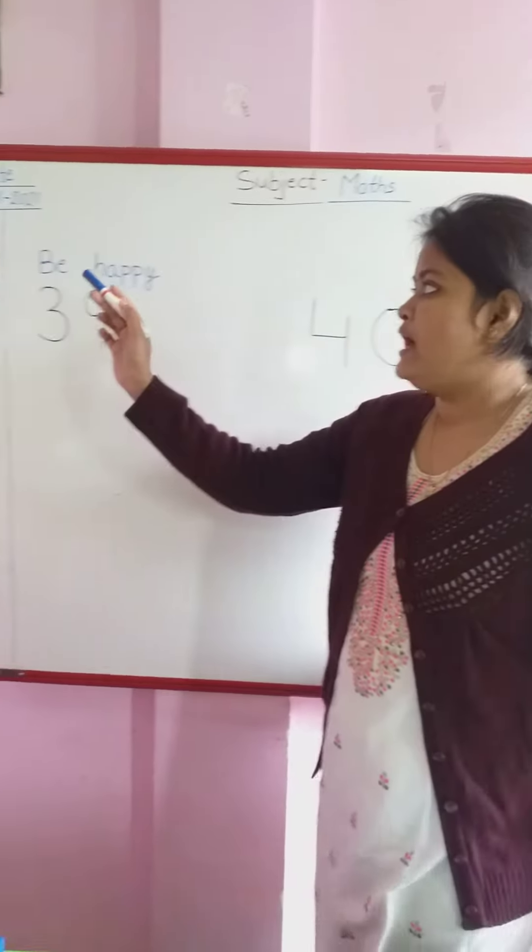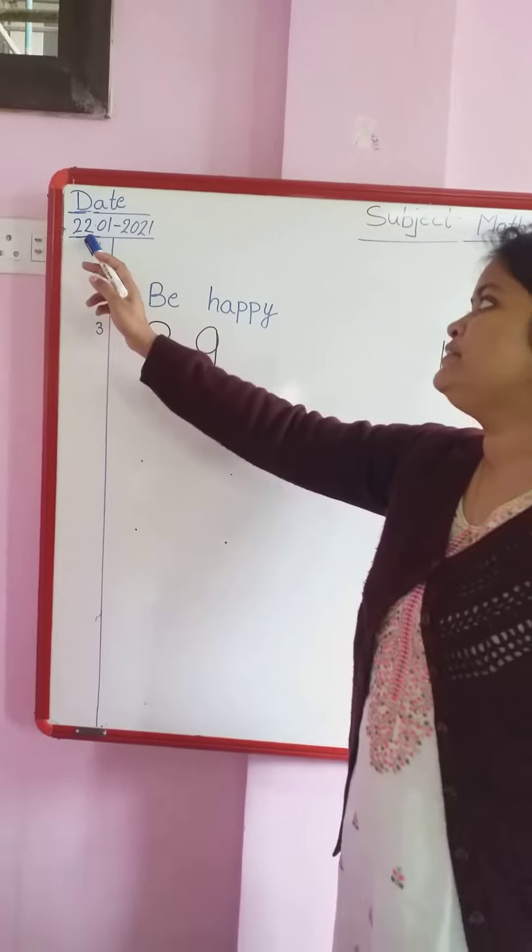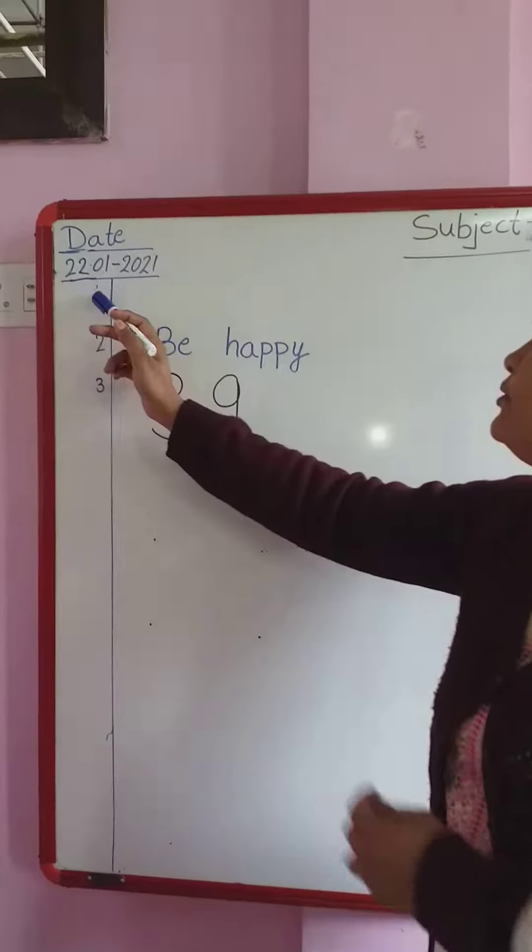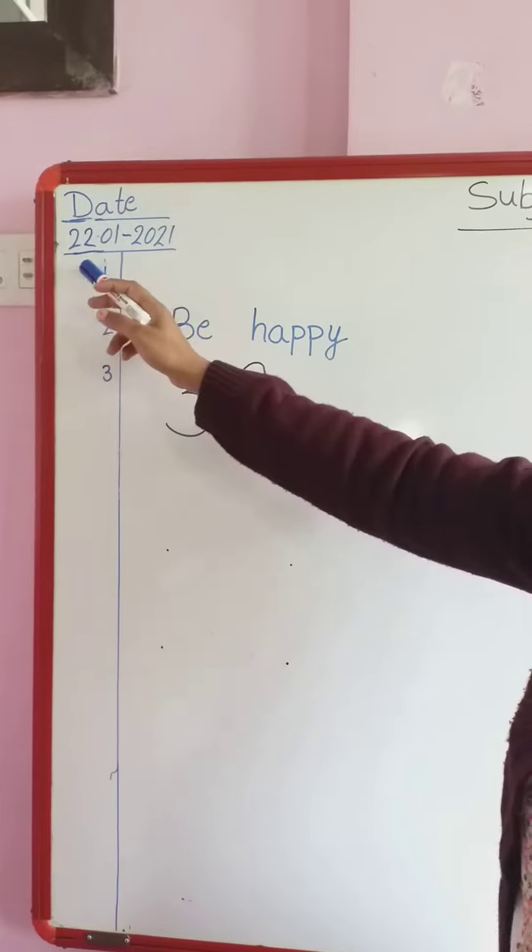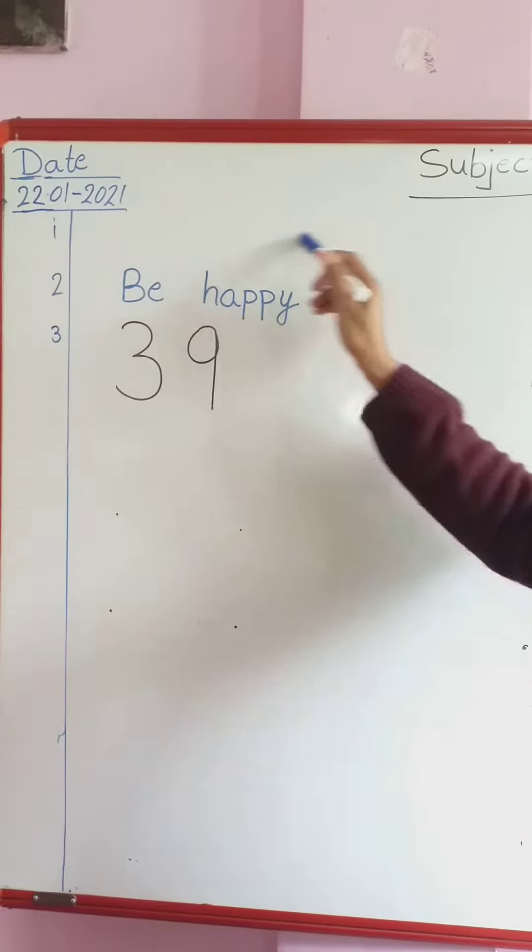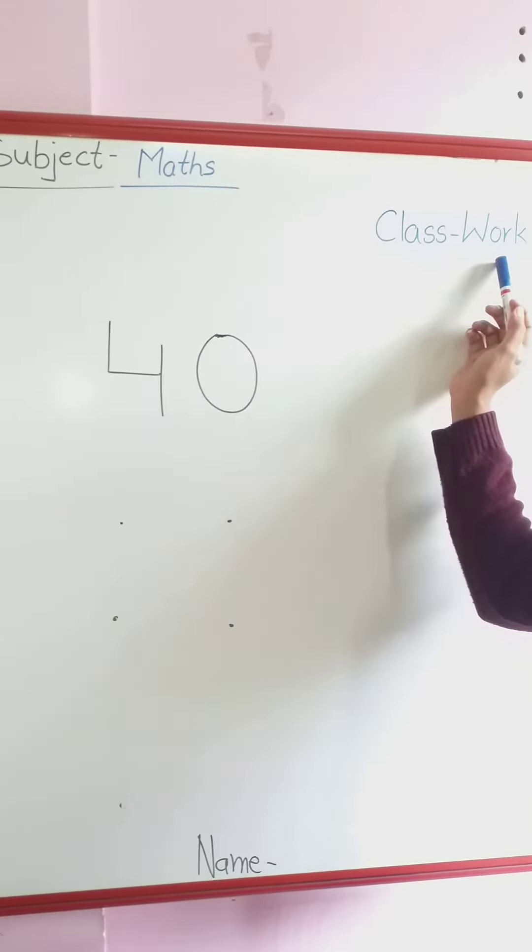Take out your maths copy and come to the left hand side. Open your copy and write your date. Today's date is 22-01-2021. Write your date and on the first line we have to write classwork.